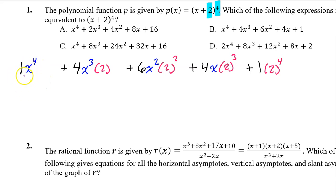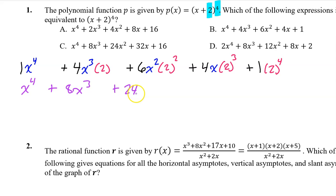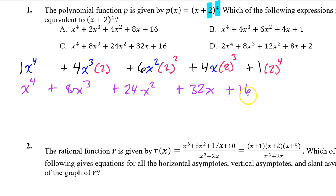Now we simplify. x to the fourth power times 1 is just x to the fourth power. 4 times 2 is 8, so we have plus 8x to the third power. 2 squared is 4, times 6 is 24, so we have plus 24x squared. 2 to the third power is 8, times 4 is 32, so we have plus 32x. And 2 to the fourth power is 16, so plus 16. So the answer is C.